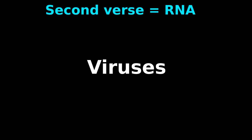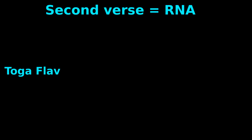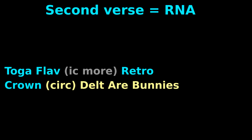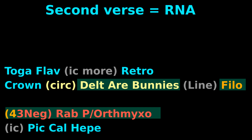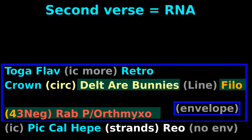Second verse RNA now: Toga Flavik, more retro, Crown, Cirque, Delta R, Bunnies, Line, Phi, Low — Four Three Neg — Rab, Porth, Mixo, Ick, Pick, Cal, Heap, Strands, Reo — No Envelope!